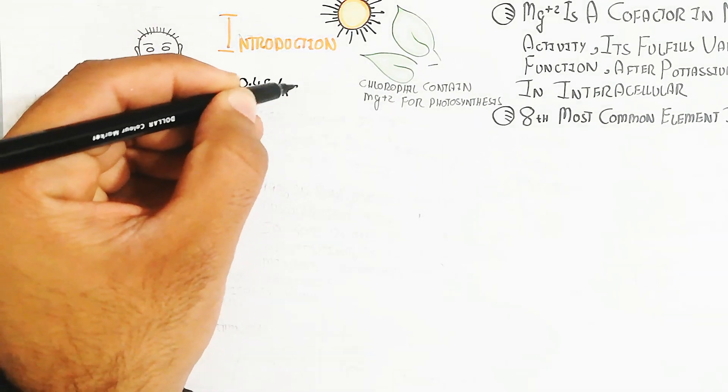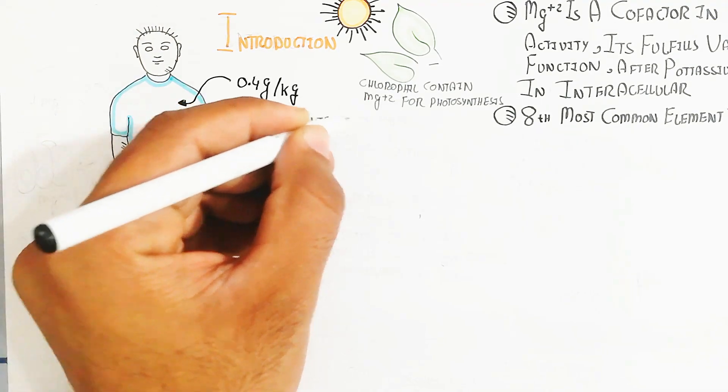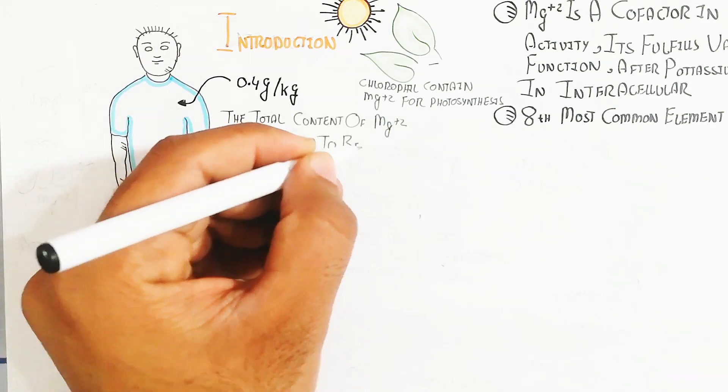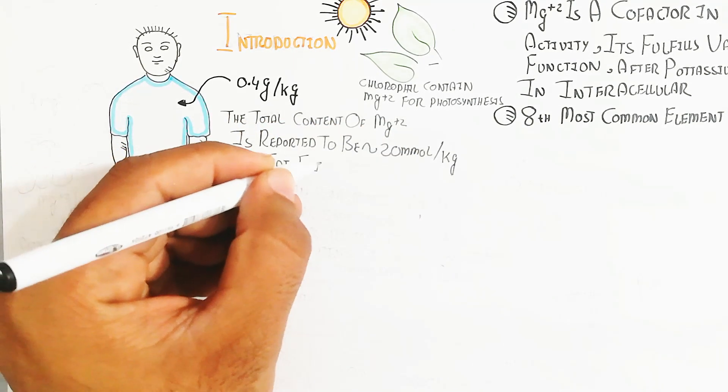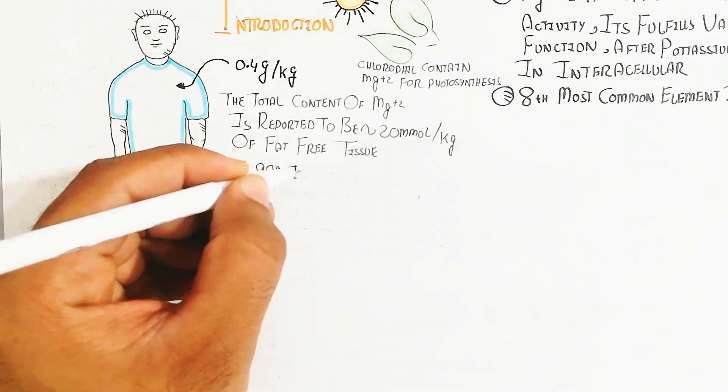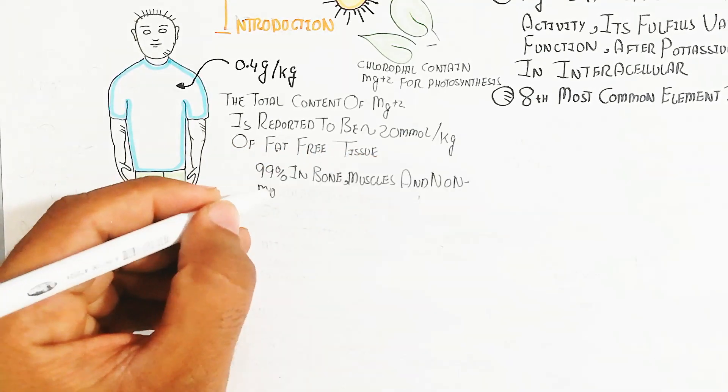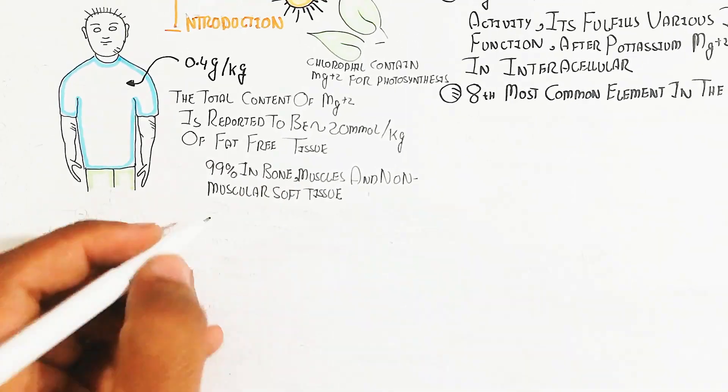0.4 grams per kilogram is the magnesium ratio. The total content of magnesium is reported to be equal to 20 mmol per kilogram of fat-free tissue. 99% is found in bone, muscle, and non-muscular soft tissue.